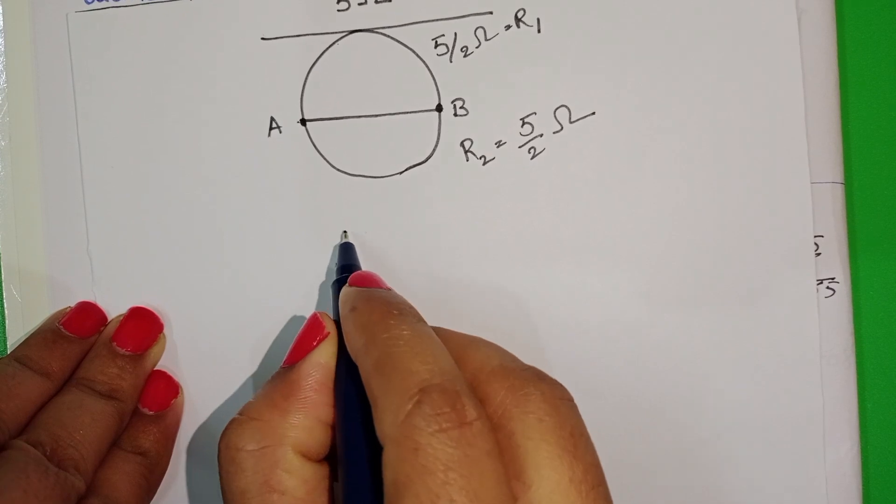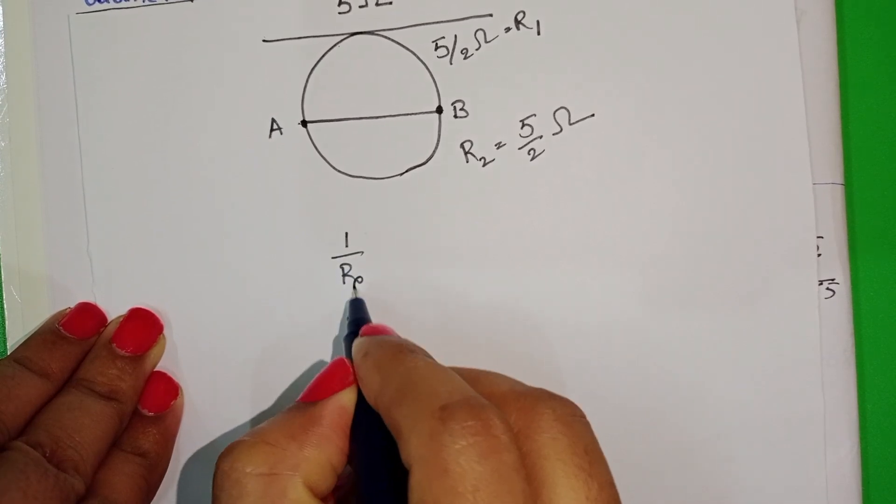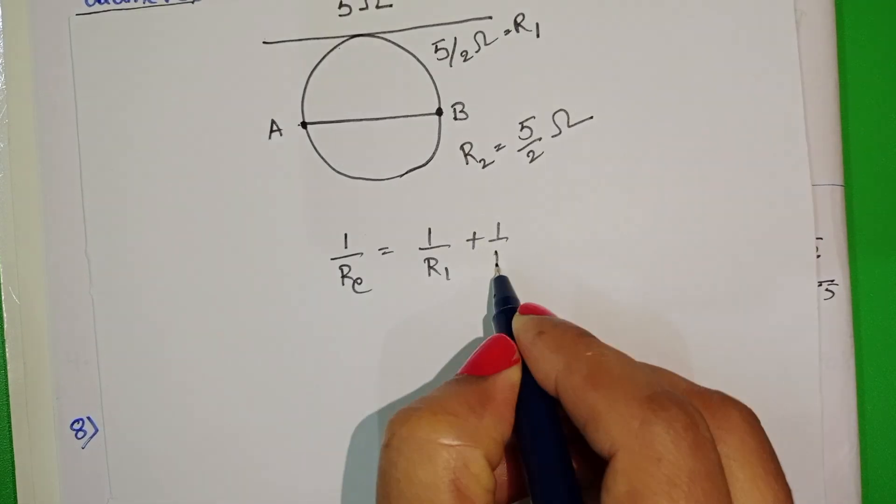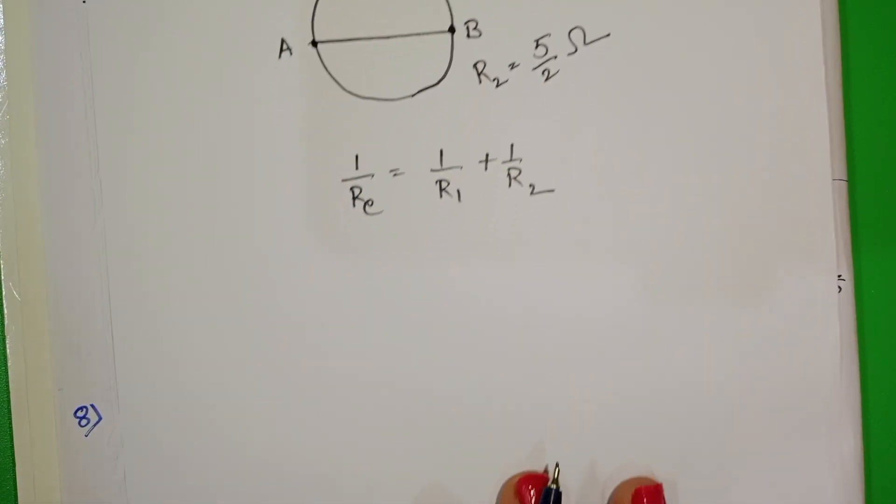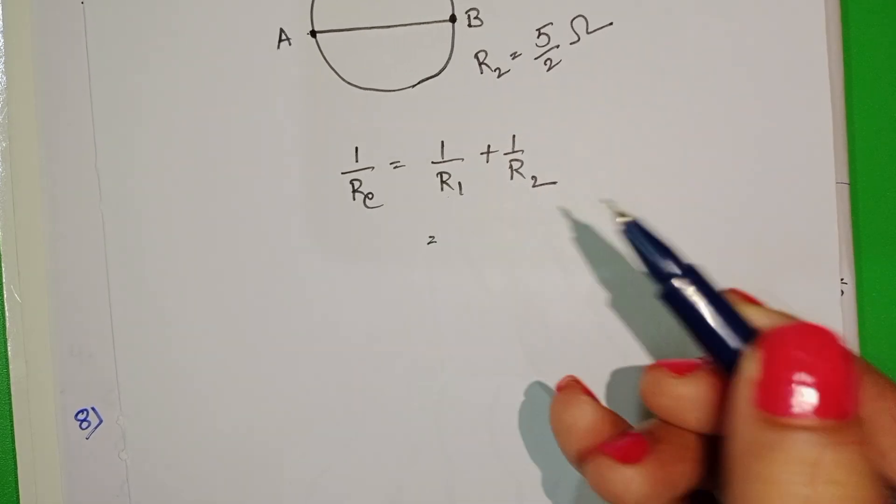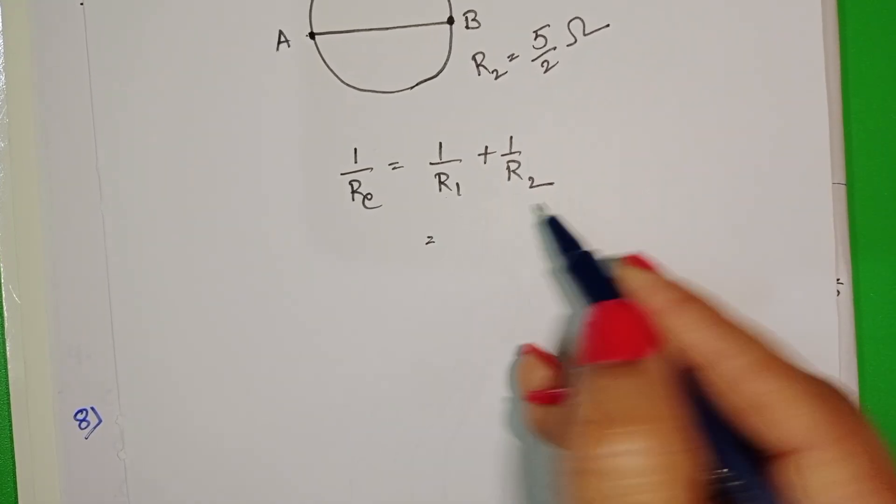Equivalent resistance: 1 by R equivalent equals 1 by R1 plus 1 by R2. Here resistance of these two resistors is the same, so 1 by R plus 1 by R.